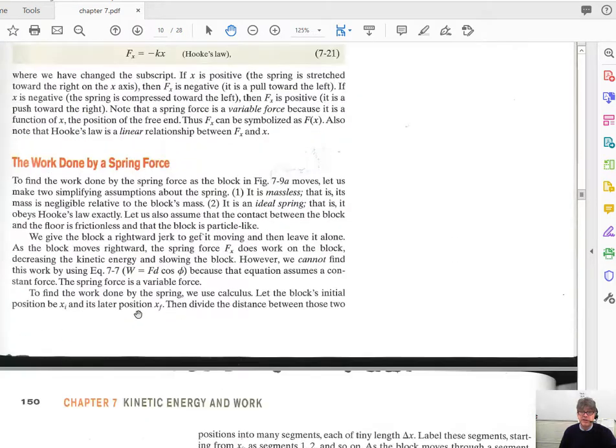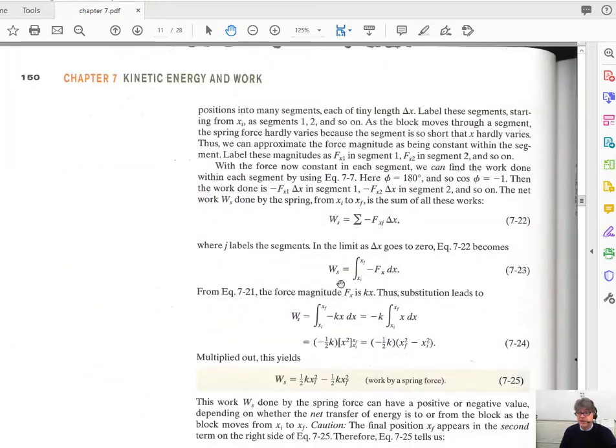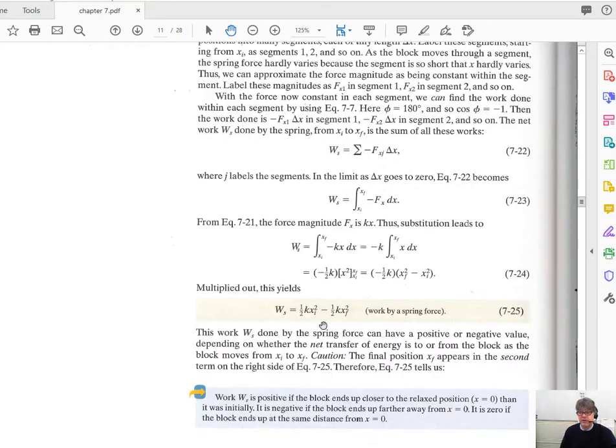We're going to really get at this notion, and they make life a lot harder here. We've already derived, not this equation per se, but we've derived the whole 1/2 kx squared formula without calculus. They're using calculus here. And I'll come back to this and explain why it's initial minus final so that this makes sense.